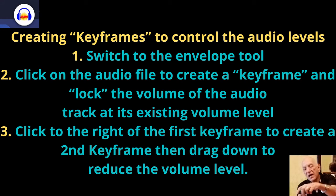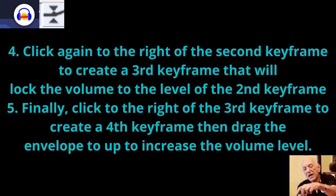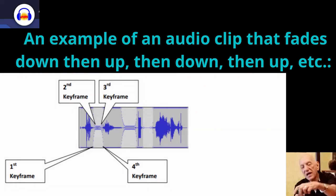Creating keyframes to control audio levels: 1) Switch to the envelope tool. 2) Click on the audio file to create a keyframe and lock the volume at its existing level. 3) Click to the right of the first keyframe to create a second keyframe, then drag down to reduce the volume. 4) Click again to create a third keyframe that locks the volume at the second keyframe's level. 5) Click to the right of the third keyframe to create a fourth keyframe, then drag the envelope up to increase the volume. This produces audio that fades down, then up, then down, then up.